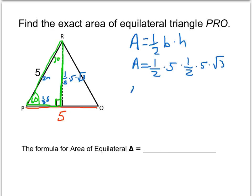We can simplify the calculations a little bit. If I bring together the two 1 halves, I have 1 half times 1 half times 5 times 5 times root 3.